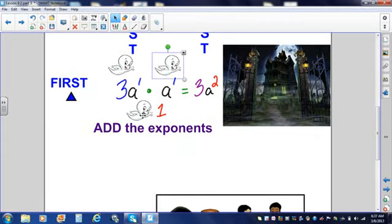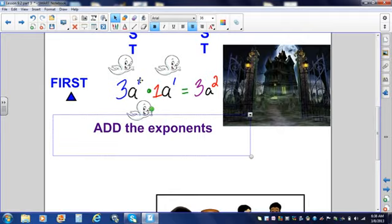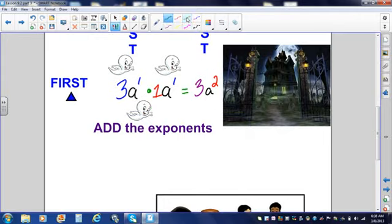You need to remember that 3a has an invisible, that's our ghost, exponent of 1. A has an invisible exponent of 1. A over here also has an invisible coefficient of 1. So, I'm going to multiply the coefficients. 3 times 1 is 3. I'm going to add the exponents. 1 plus 1 gives me 2. So, that's going to give me 3a squared.